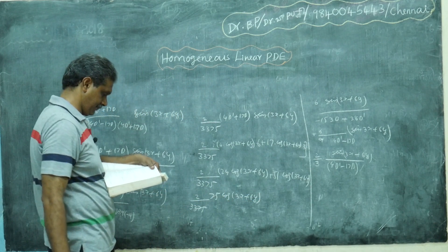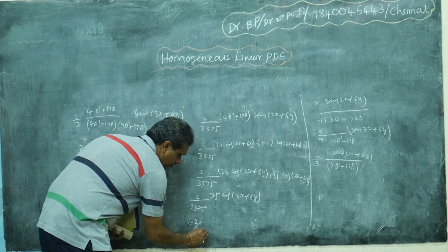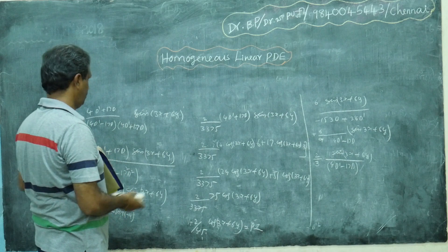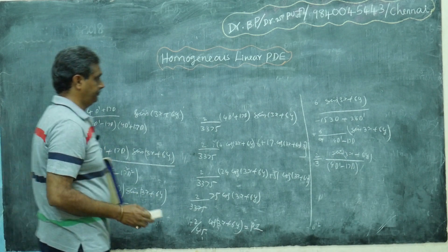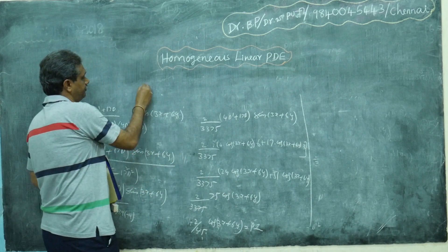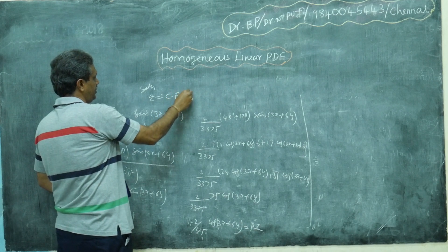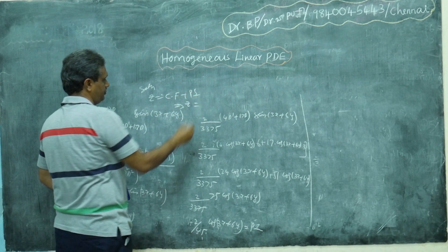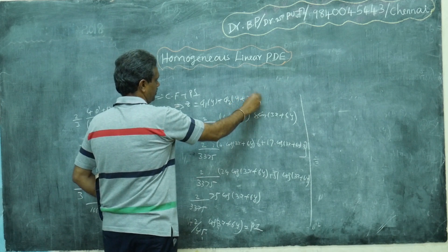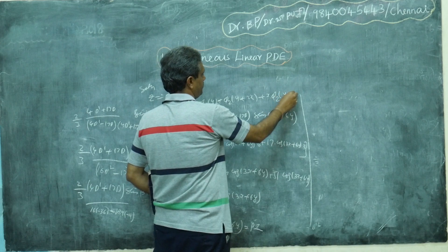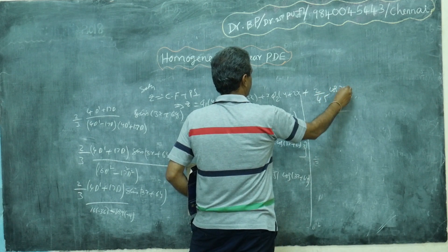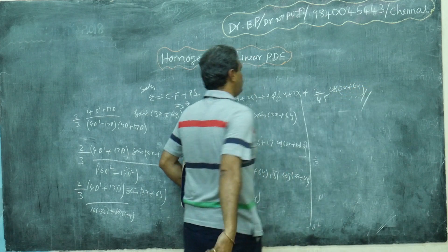After cancellation, PI = (2/45) cos(3x + 6y). So the complete solution is z = CF + PI, which is z = φ₁(y) + φ₂(y + 2x) + x·φ₂(y + 2x) + (2/45) cos(3x + 6y). When you have D + D' or D - D' in the denominator, the conjugate attack works.